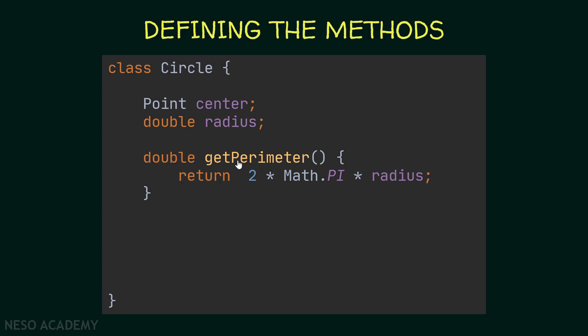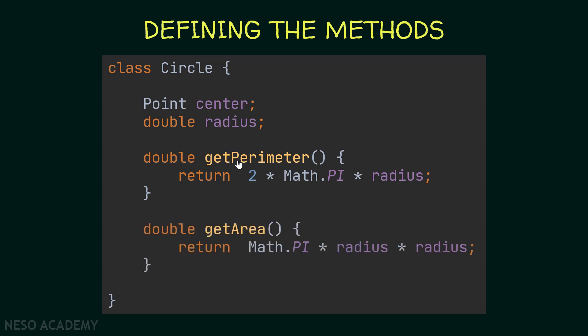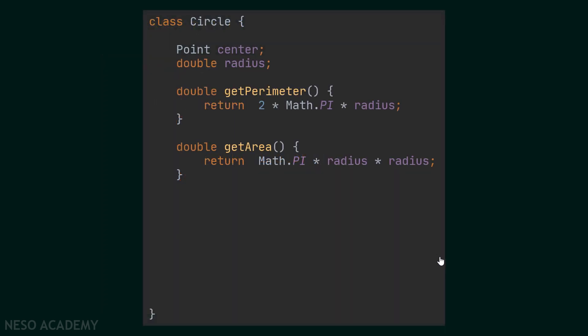Now let's create the getArea method. It returns a double, and inside it I'm returning Math.PI multiplied by radius multiplied by radius, because the area of a circle equals π r squared.